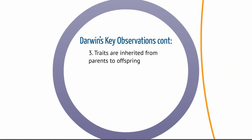The third observation is that traits are inherited from parents to offspring. This is something that we know more about now with DNA and genetics, but at the time they didn't know what was inherited or how that might possibly work.